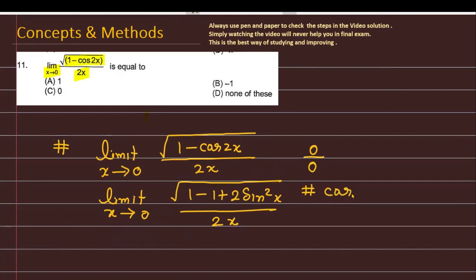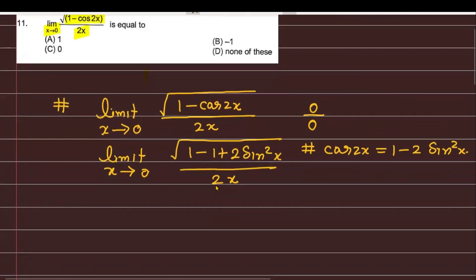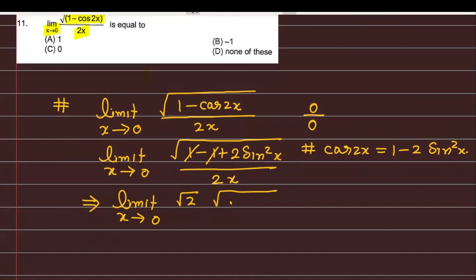Which is cos of 2x, जिसको आप लिख सकते हैं 1 minus 2 sin²x. अब आप देख सकते हैं कि यहाँ पर 1 से 1 directly cancel हो रहा है। After cancellation, आप इसे लिख पाएंगे limit x tending to 0, root 2 को आप separate कर सकते हैं, फिर आपके पास है square root of sin²x, divided by 2 times x.